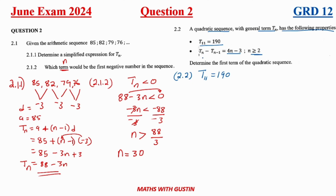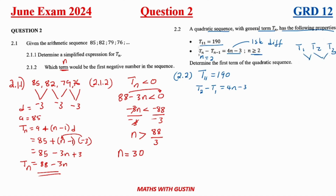To understand the given expression, note that if n equals 2, then Tn minus T(n-1) becomes t2 minus t1 — that is the first difference. So this expression represents the first difference of the quadratic sequence. With that in mind, a quadratic sequence has a second difference that is constant.